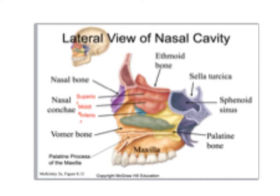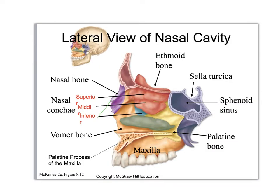This is very similar to the previous slide, but there's no nasal cartilage — it has been removed. Now you can see the vomer bone much better, the nasal bone, and a really nice view of the superior, middle, and inferior nasal conchae.